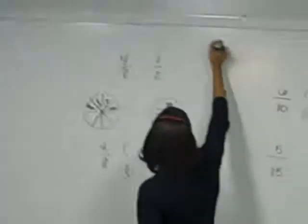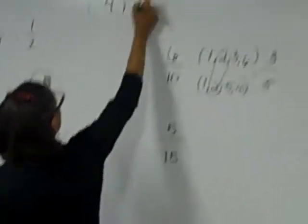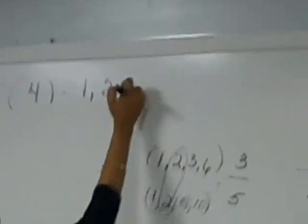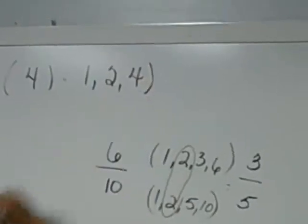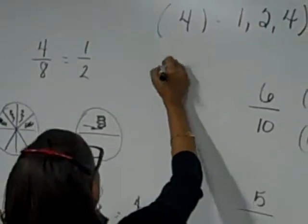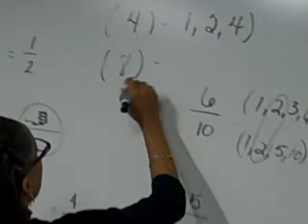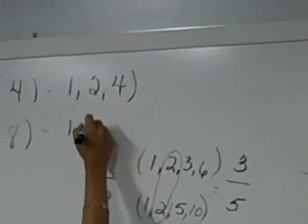Okay so let's look, let's find the factors for four. One, two, four. Okay now let's find the factors for eight. One, two, four, and eight.